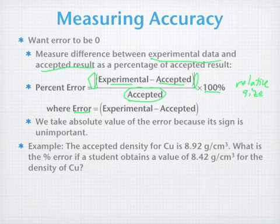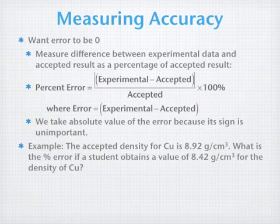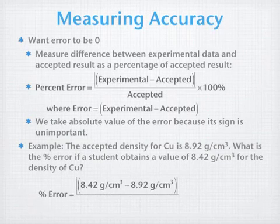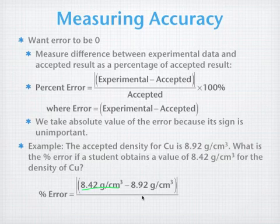Let's do a quick example. We have an accepted value of the density of copper of 8.92 grams per cubic centimeter. What would the percent error be if a student obtains a value of 8.42 grams per cubic centimeter for the density of copper? So let's set it up. Start off, the percent error equals, here's our experimental value, 8.42 grams per cubic centimeter minus our actual value or accepted value of 8.92 grams per cubic centimeter. Notice what that's going to give us is an absolute value of negative 0.50 grams per cubic centimeter. I'll leave out the units for now.